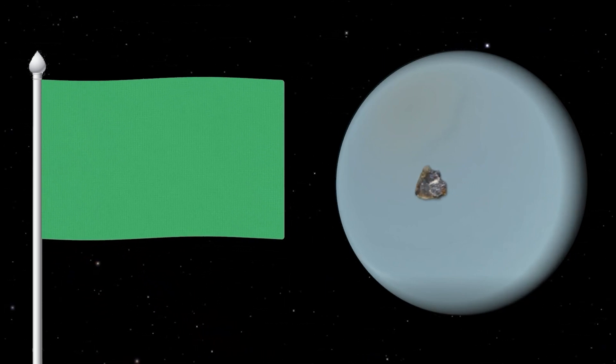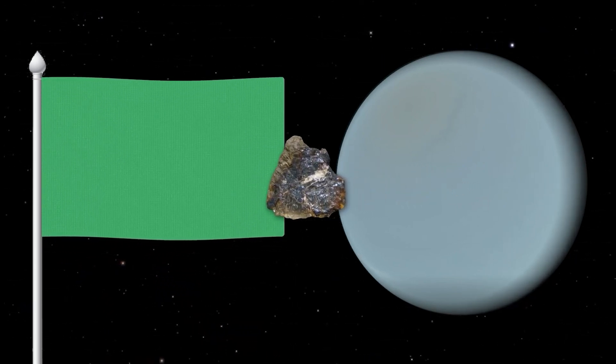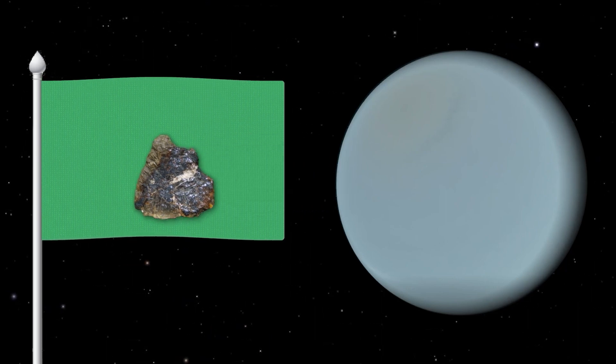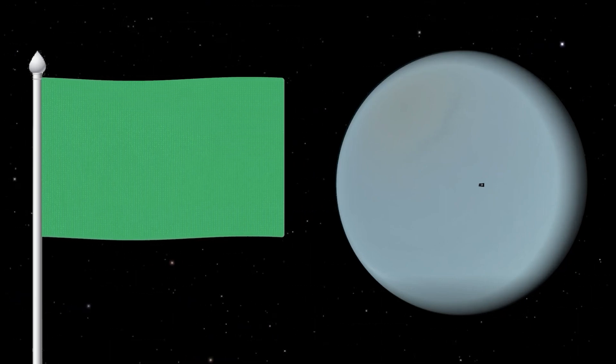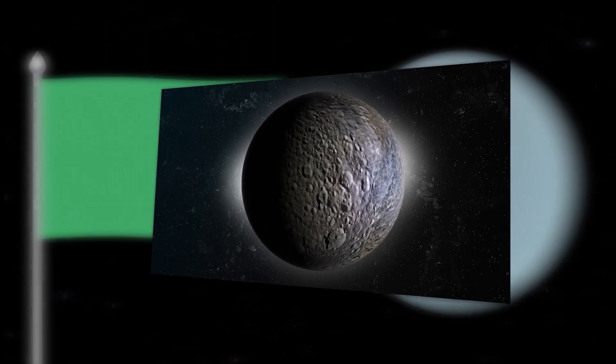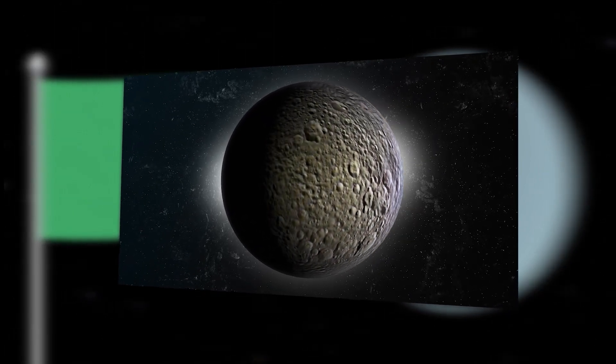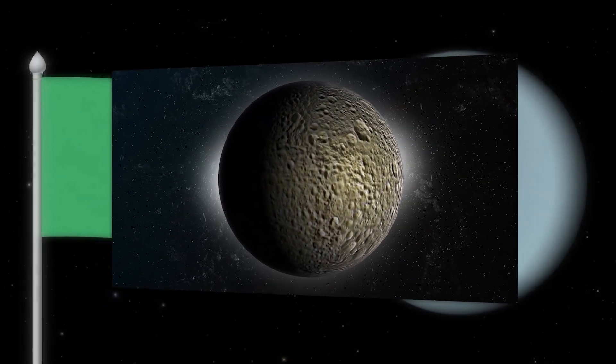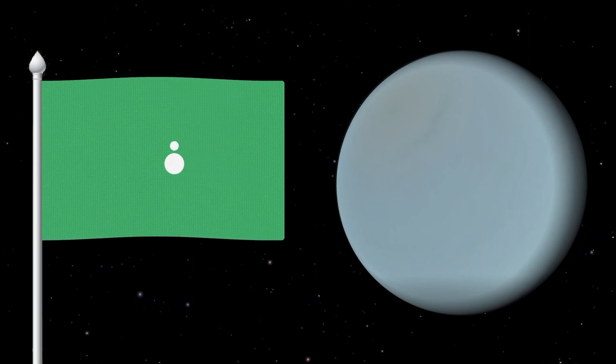First of all, the flag will be green under the color of Uranus, which absorbs and reflects light and consequently has a green tint. In the center of the flag will be Uranus itself in the form of a white circle and, on top of it, Titania in the form of a white circle too. It's the biggest moon of Uranus.